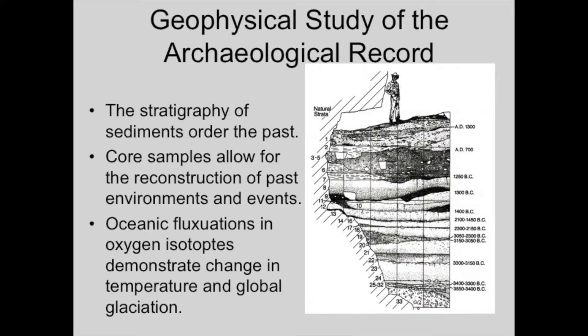Other things that archaeologists have incorporated into their analyses — things that tie archaeology to physical geography — have to do with oceanic changes. Archaeologists will take a look at things like oxygen isotopes and their expression within seafloor sediments, and how these isotopic expressions within the natural environment tell us something about patterns of global temperature change, or the global effects of things like glaciation. Archaeologists today will utilize qualities of the natural record to be able to inform the cultural record.